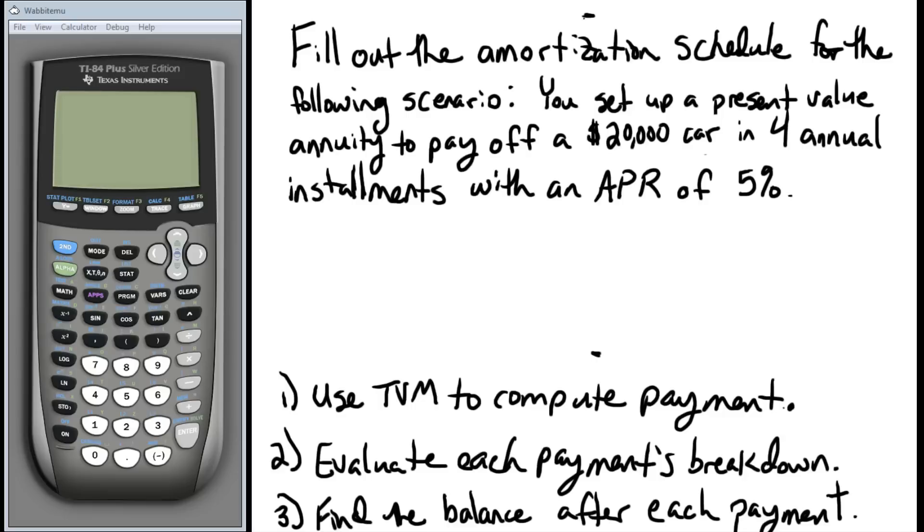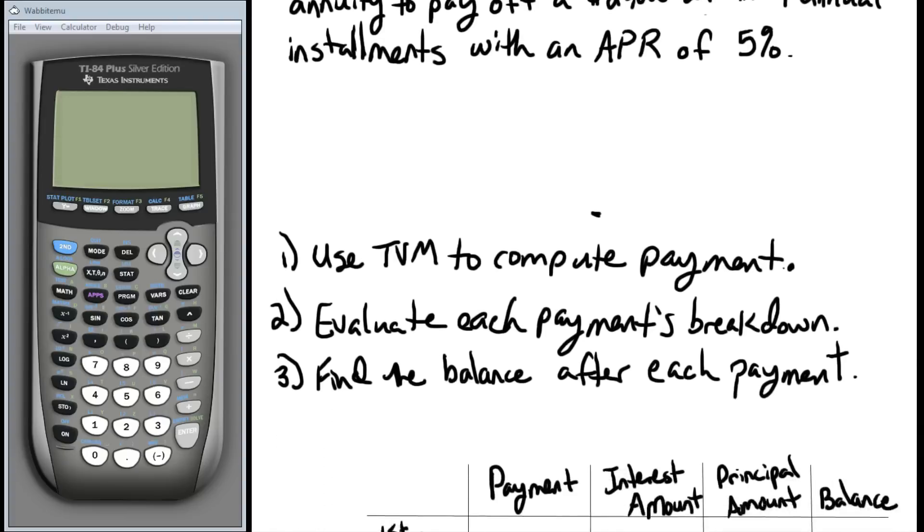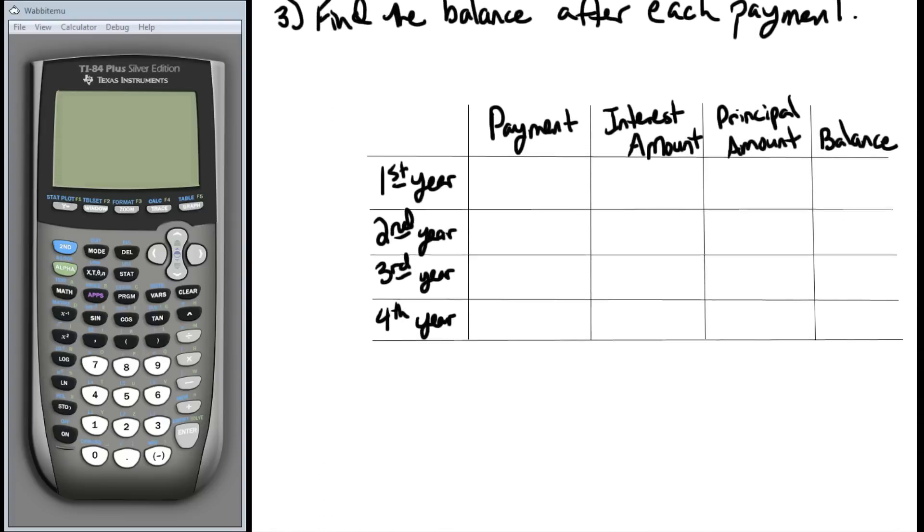Our strategy here is that we need to use the formulas or the TVM solver to find and compute the actual annual payment. From that annual payment we're going to look at its breakdown of how much goes to interest and how much goes to principal, and then we're going to use that to find the balance, our remaining balance of the account after each payment is made. Let's look at a table that does that for us.